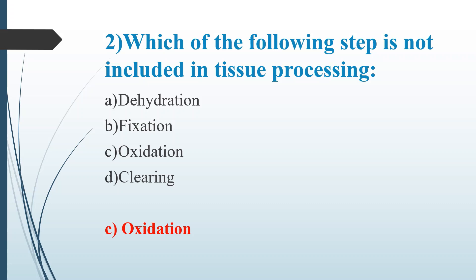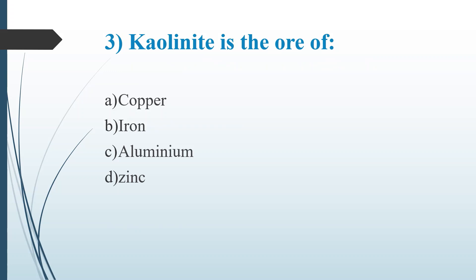Third Question: Kaolinite is the ore of — Option A: Copper, Option B: Iron, Option C: Aluminium, Option D: Zinc. Answer is Option C, Aluminium. Ores are naturally occurring solid materials from which a metal or valuable mineral can be extracted profitably.